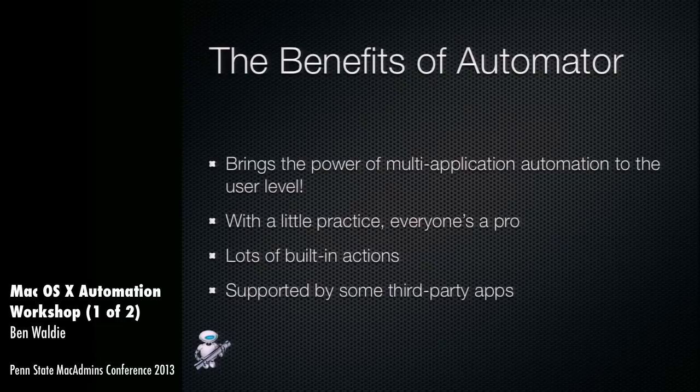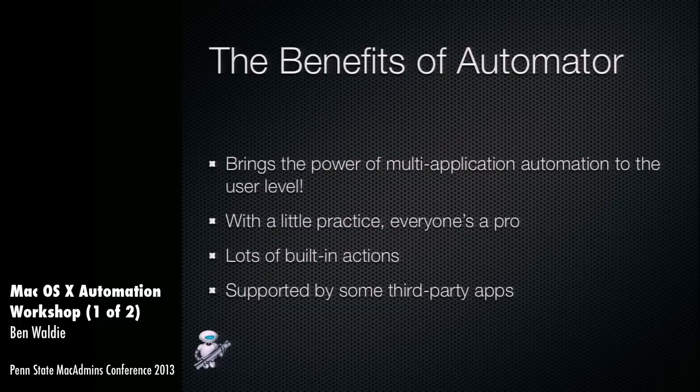Automator comes with probably a few hundred actions to do things with Apple's apps like Mail, Address Book, Calendar, the Finder, and some system stuff. There are also lots of third-party actions you can get — some released in the Mac App Store, others you can download online for all different apps and processes. A lot of third-party apps also support Automator: Pixelmator from the Mac App Store has Automator actions, as do Transmit and Fetch. These actions are generally built into the application, so when you install an app that has Automator actions, they just show up in Automator.